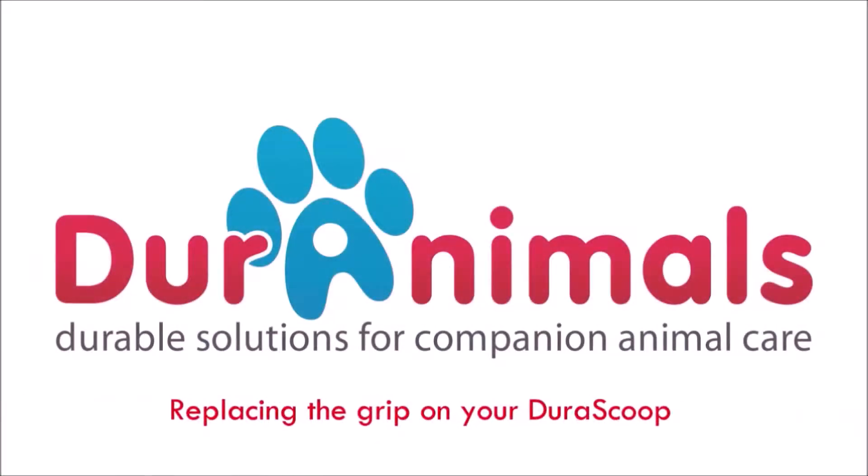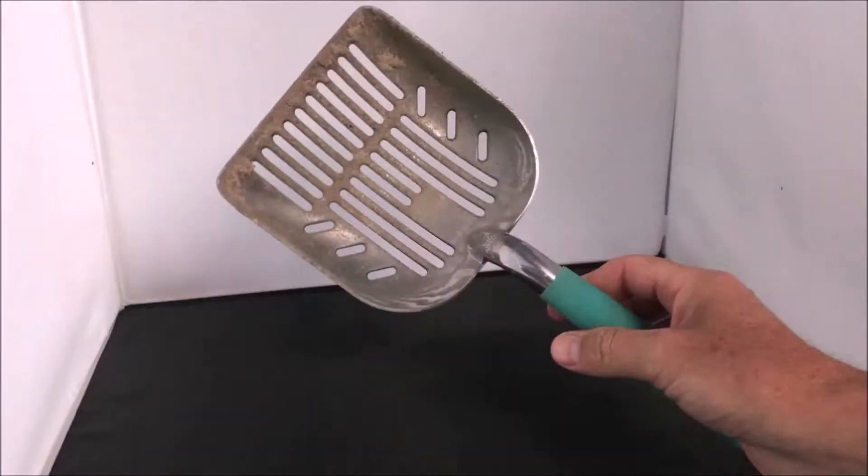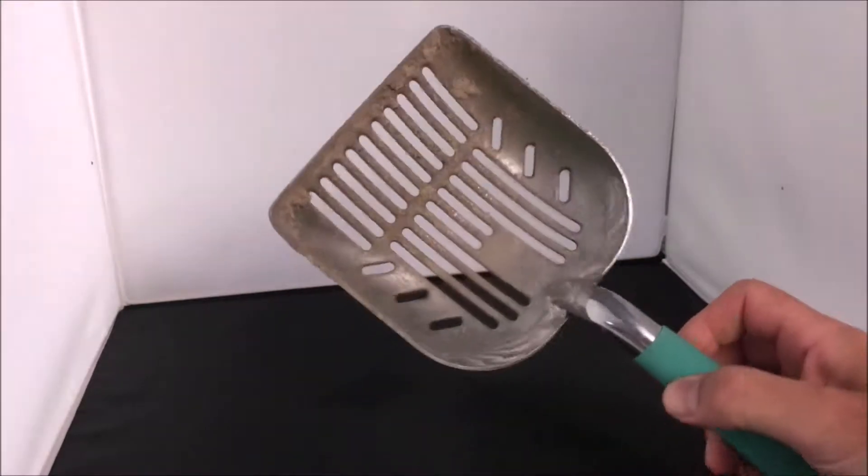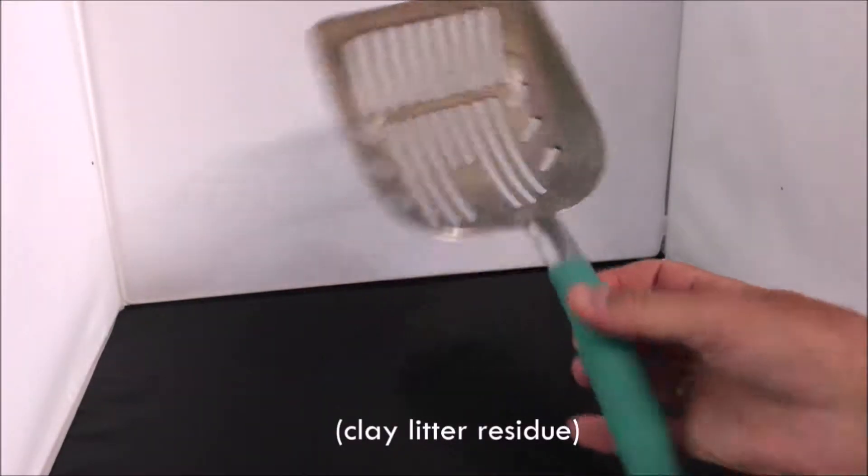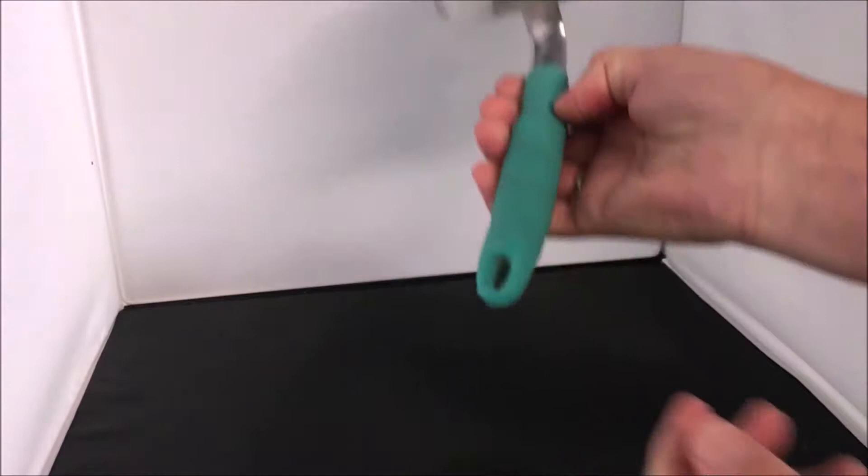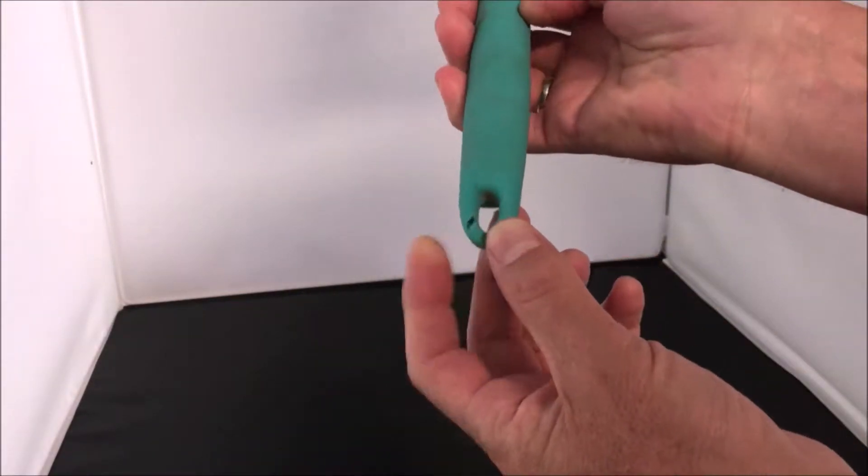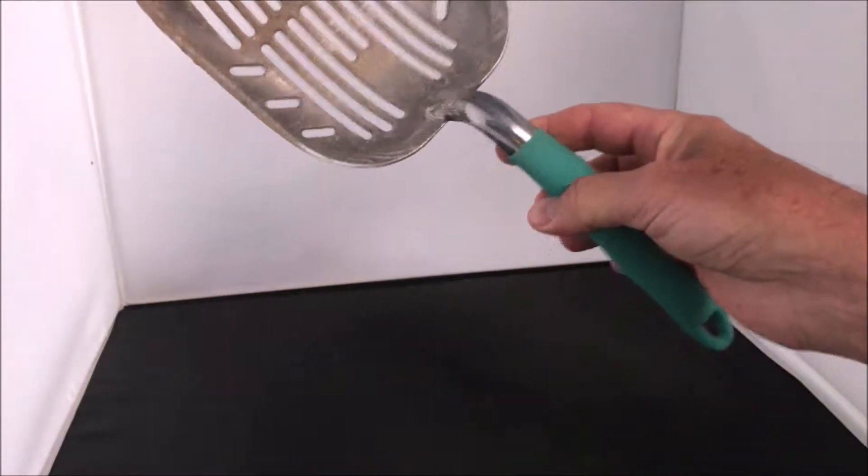Just need to start all over again. It's not that hard. So here we have a DuraScoop that's been used for some time. As you can see, it's got some buildup on it. It also has a tear on the hanger hole right here. And we're going to show you how to get this cleaned up and replace that grip.